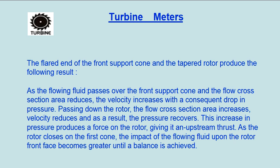Passing down the rotor, the flow cross section area increases, velocity reduces and, as a result, the pressure recovers. This increase in pressure produces a force on the rotor, giving it an upstream thrust. As the rotor closes on the front cone, the impact of the flowing fluid upon the rotor front face becomes greater until a balance is achieved.